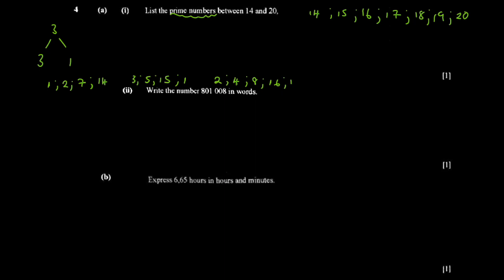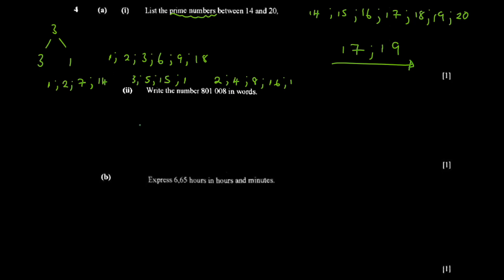17 only has factors 17 and 1, so 17 is a prime number. For 18, the factors are 1, 2, 3, 6, 9, and 18 — not prime. 19 only has factors 19 and 1, so 19 is also a prime number. The answer is 17 and 19. This should be intuitive — you should be able to write the answer just by inspecting the numbers.